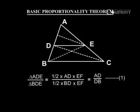Triangle ADE by triangle BDE equals 1/2 × AD × EF by 1/2 × BD × EF, equals AD by DB. Equation 1.